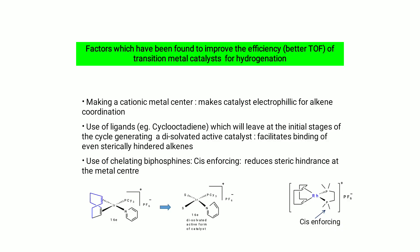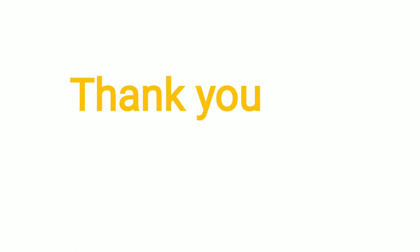Factors found to improve efficiency (better TOF) of transition metal catalysts for hydrogenation: (1) Making a cationic metal center makes the catalyst electrophilic for alkene coordination. (2) Use of ligands such as cyclooctadiene (cod), which leave at the initial stage of the cycle generating a disolvated active catalyst that facilitates binding of even sterically hindered alkenes. (3) Use of chelating biphosphines as cis-enforcing ligands reduces steric hindrance at the metal center. This completes the coverage of organometallic chemistry including sandwich compounds such as ferrocene. Thank you and bye.